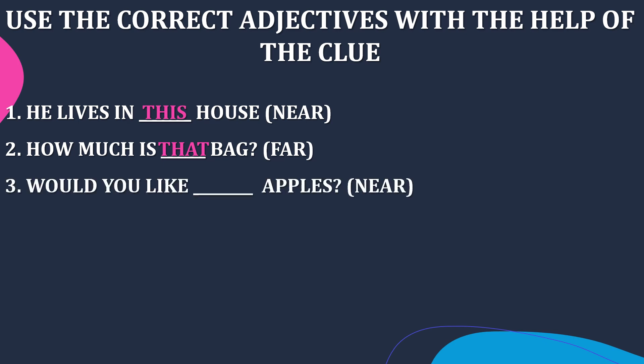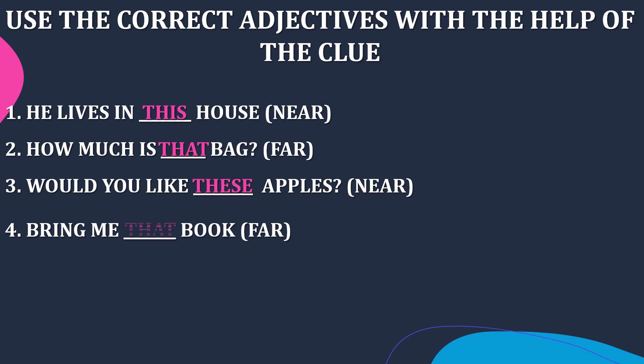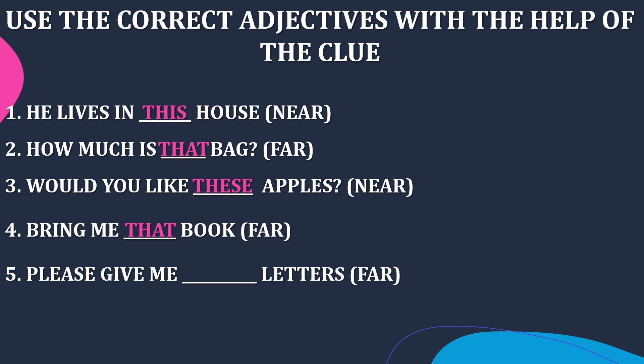Third sentence: 'Would you like ___ apples?' The clue is near. Apples is the plural form of noun and the object is near you, so the answer is 'these.' Would you like these apples? Fourth sentence: 'Bring me ___ book.' The book is far away from you and it's a singular noun, so the answer is 'that.' Bring me that book.